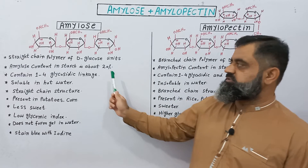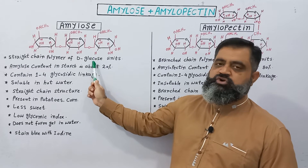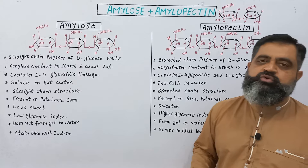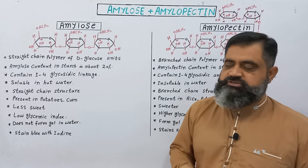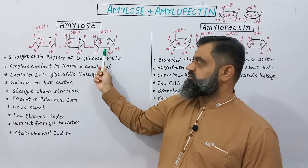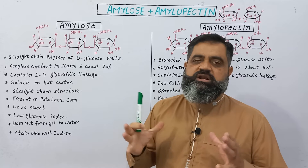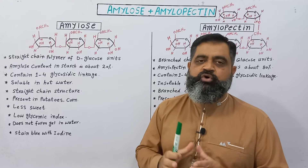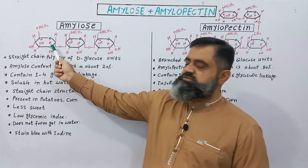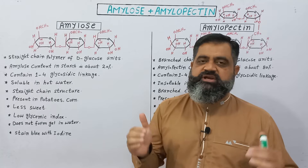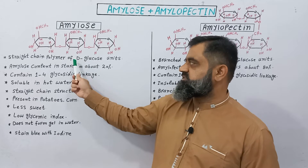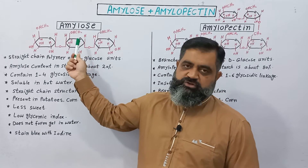The first difference is in the structure of these two starches. Amylose is a straight chain polymer of glucose units, also known as D-glucose units. As you can see, these glucose molecules are linked together by a bond known as a glycosidic bond. Many molecules of D-glucose are arranged together to form a larger molecule, which is a polymer, making the starch known as amylose.